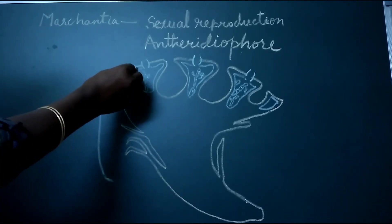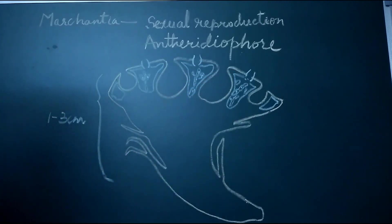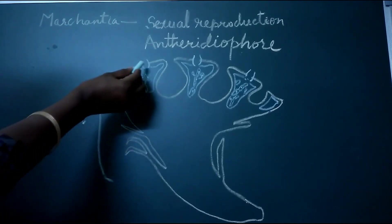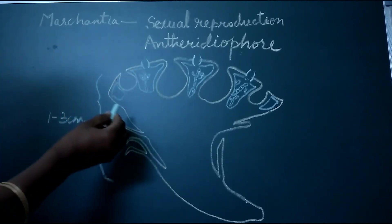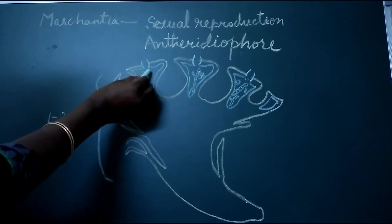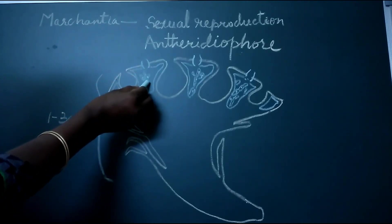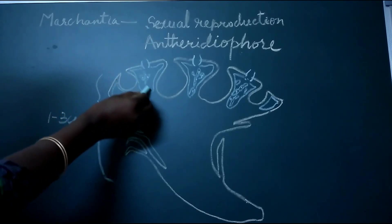The upper epidermis is interrupted by a number of air pores. Each opening has an air chamber below it. This air pore resembles that of the thallus, and below the air pore it protrudes into a chamber called the air chamber.